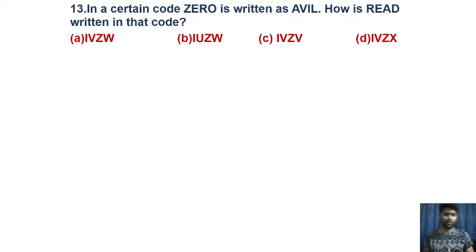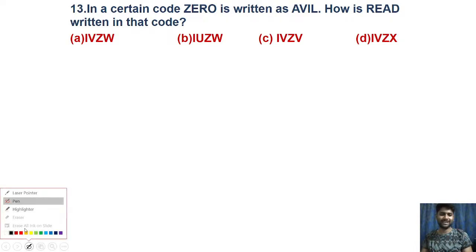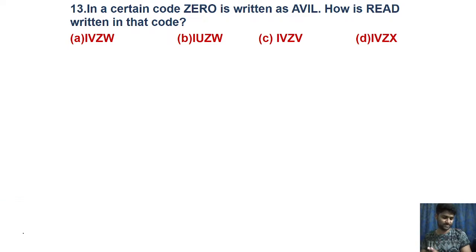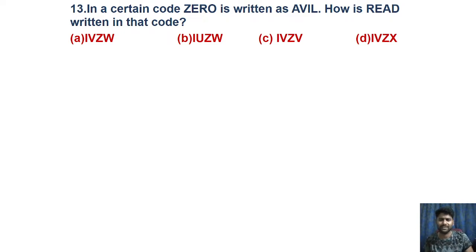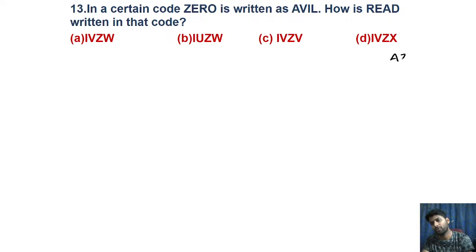There are interesting questions in coding and decoding involving opposite pairs. If you know the opposite pairs you can crack all such questions easily. We have 26 letters forming 13 pairs. To memorize all 13 pairs I use different names. With the word 'Azaruddin,' I remember that A-Z is an opposite pair.